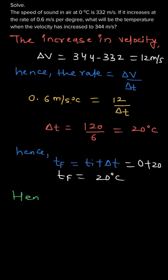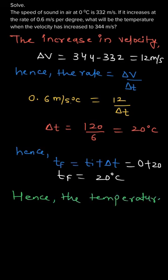The final temperature is 20 degrees Celsius. So the temperature corresponding to a velocity of 344 meters per second is equal to 20 degrees Celsius, and that is the answer for this question. Thank you.